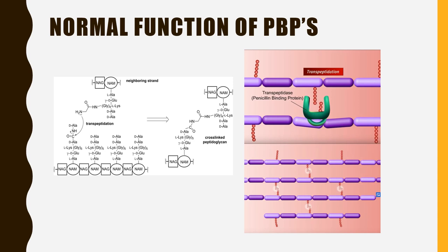In the picture on the left, we can see the peptidoglycan layer is made up of alternating polymers of NAG (N-acetylglucosamine) and NAM (N-acetylmuramic acid), with chains of amino acids attached above these. Above this is the site of transpeptidation, where the penicillin binding protein cross-links the layers of peptidoglycan. On the right we have the end product of the two layers now being cross-linked, and another diagram showing the penicillin binding protein in green attaching amino acids in red.